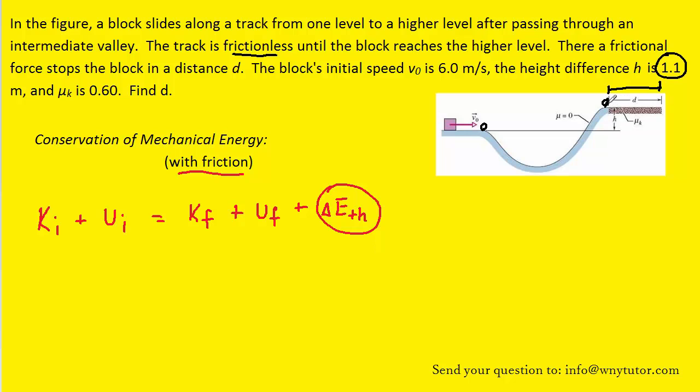Now let's notice as the block slides across that surface, its height is not changing. So there's not going to be any gravitational potential energy at play here. We also note that as the block slides across, it's eventually going to stop at this point right here. So in other words, the final speed is going to equal 0 meters per second. So that will eliminate this term.